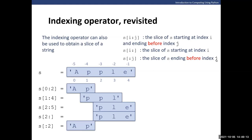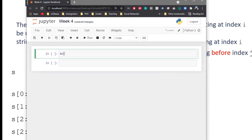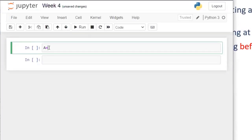If you don't want to specify the end of the string and want a slice from position i to the end, just provide the starting position followed by a colon and leave it empty. Similarly, from nothing to j means from zero to j — for example, nothing to two gives the same result as zero to two.